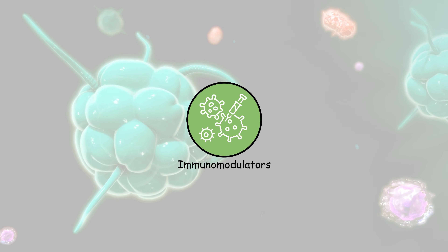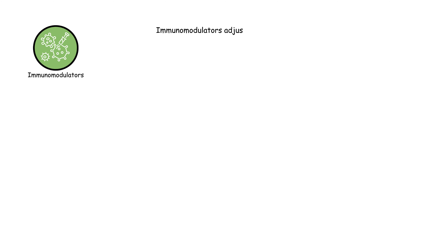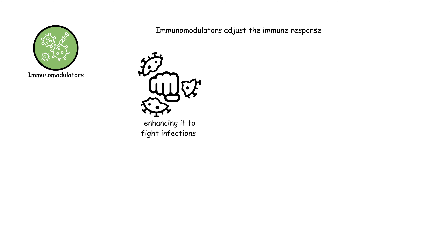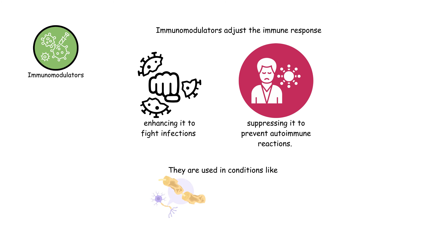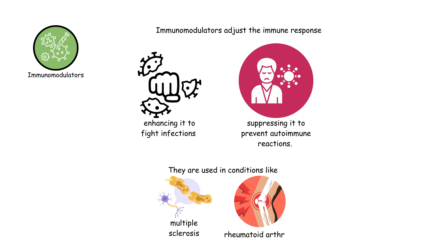Immunomodulators adjust the immune response, either enhancing it to fight infections or suppressing it to prevent autoimmune reactions. They are used in conditions like multiple sclerosis and rheumatoid arthritis.